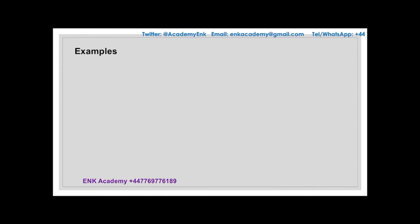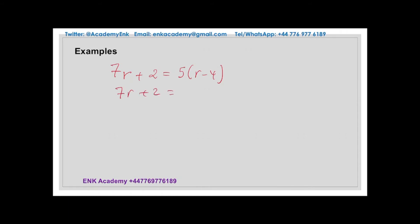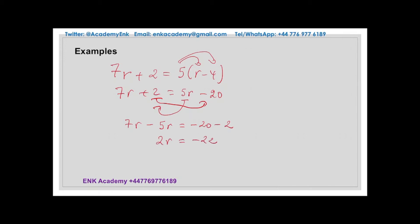Let's try one more. We have 7r plus 2 equal to 5 times the bracket r minus 4. Let's multiply the parenthesis first: 5 times r is 5r, and 5 times minus 4 is minus 20. What you can do is send the r on this side, changing the sign, and send 2 on this side, changing the sign — which is equal to subtracting 5r on both sides and subtracting 2 on both sides. We have 7r minus 5r equal to minus 20 minus 2, which gives us 2r equal to minus 22. We divide by 2 on both sides, giving r equal to minus 22 divided by 2, which is minus 11. The solution is r equal to minus 11.